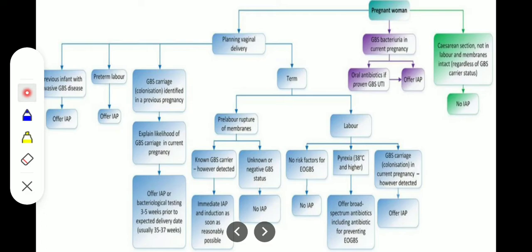If we look at the third point, there is some difference. In preterm labor, we will offer IAP if the patient had confirmed GBS. Then if the patient had GBS carriage colonization identified in the previous pregnancy, then in that case we have to explain the likelihood of GBS carriage in the current pregnancy.